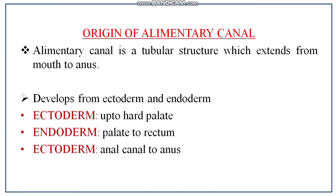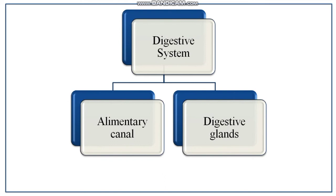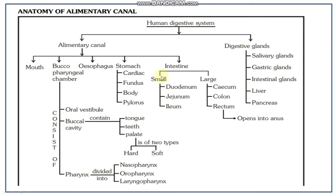The alimentary canal develops from ectoderm and endoderm. From the mouth up to the hard palate, this part is ectodermal in origin; from the palate to the rectum it is endodermal in origin; and the anal canal to the anus is ectodermal in origin. The alimentary canal is made of mouth, buccopharyngeal chamber, esophagus, stomach, and intestine.